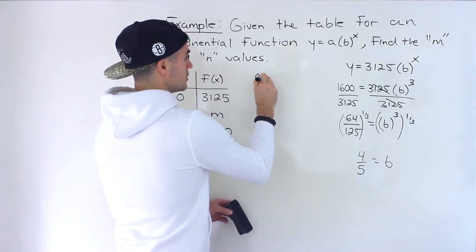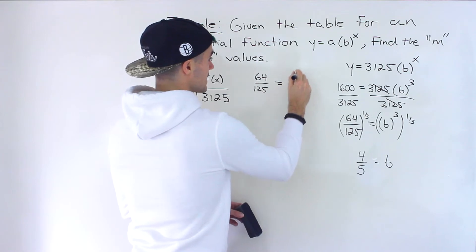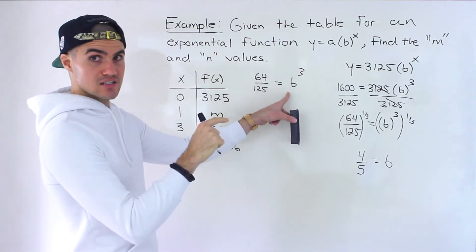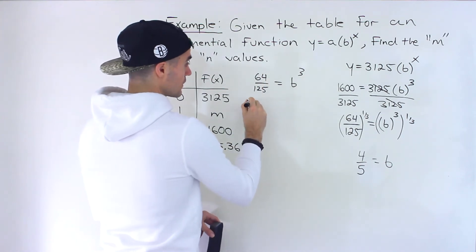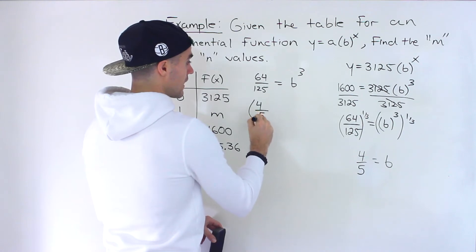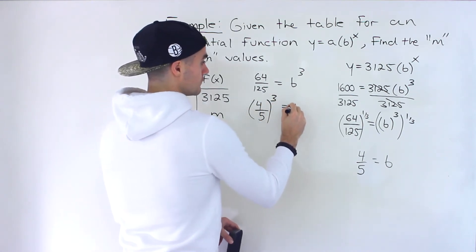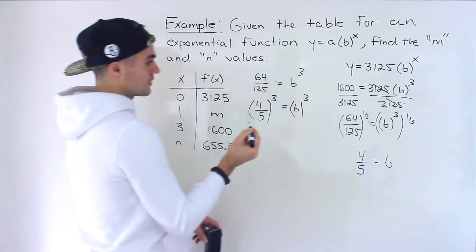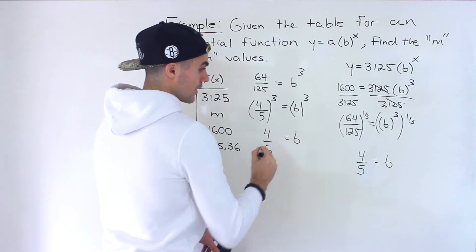At this point, you could just notice how that left side, you could change to be in this format. So notice you could take the third root of 64, third root of 125. Third root of 64 is 4, third root of 125 is 5. You could change that to be 4 over 5 to the power of 3. And then we have b to the power of 3, and then we could drop the exponents, and b would be 4 over 5.